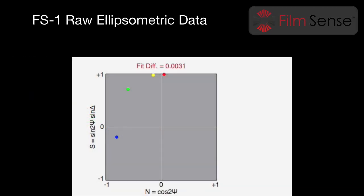The FS1 software plots the measured ellipsometric data as colored points on a 2D plane. The four colors correspond to the four FS1 measurement wavelengths.